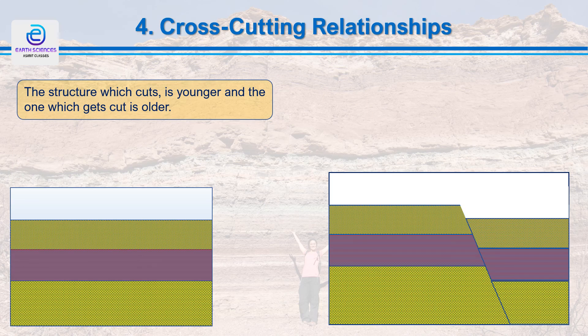The cross-cutting relationship principle states that the structure which cuts is younger, and the one which gets cut is older. When something cuts across a sedimentary sequence, it is always younger than that sequence — in other words, all cross-cutting features are produced after the sediment is deposited. The cross-cutting feature may be a structural feature like a fault, an intrusion like a dike, or a feature of erosion like a valley or a break in deposition. All such changes are brought about after deposition of sediment has taken place.